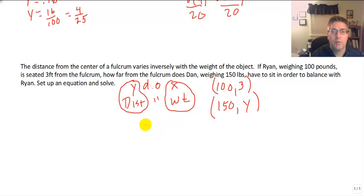So I know that I have to multiply my ordered pairs in an inverse variation. So 100 times 3 equals 150 times y. And I want to solve for y, so I divide both sides by 150.